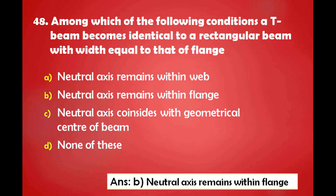Among which of the following conditions does a T-beam become identical to a rectangular beam with width equal to that of the flange? a) Neutral axis remains within the web, b) Neutral axis remains within the flange, c) Neutral axis coincides with the geometrical center of the beam, d) None of these. The answer is: when the neutral axis remains within the flange.